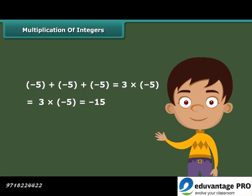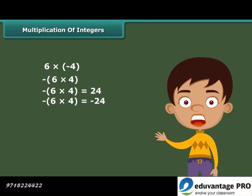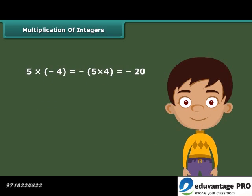Let's now find the product of a positive and a negative integer. Firstly, multiply 6 by 4 and then put a minus sign before the product obtained. We get minus 24. Similarly, 5 into minus 4 is equal to minus 5 into 4, which equals minus 20.